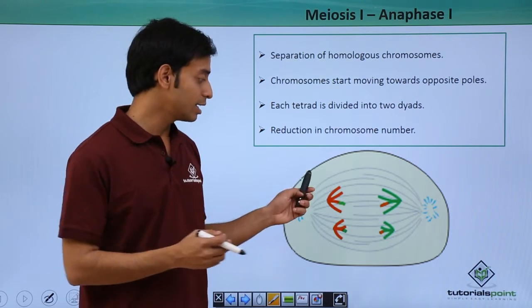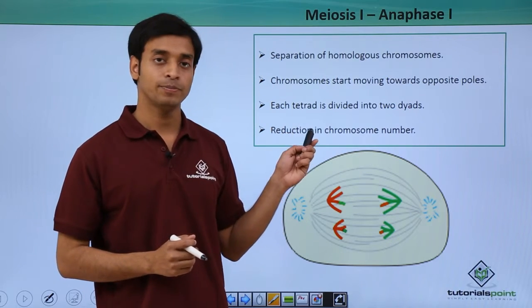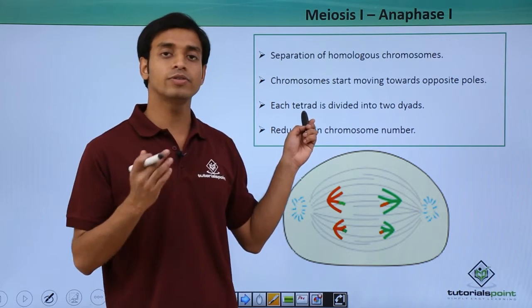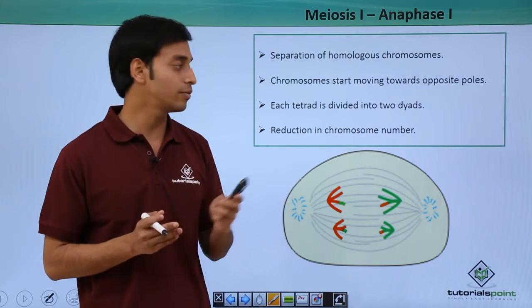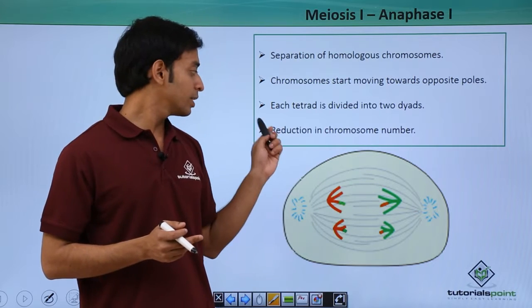Hence they get separated. So the initially the tetrad which was present, that is four sister chromatids, now gets converted to two dyads because this has been separated. The reduction in chromosome number.